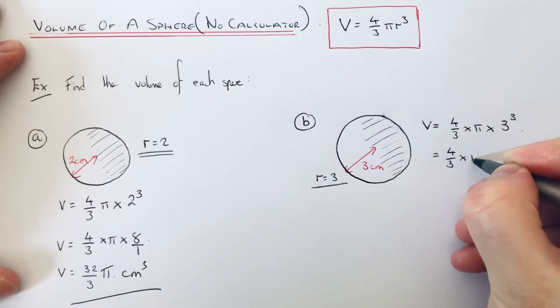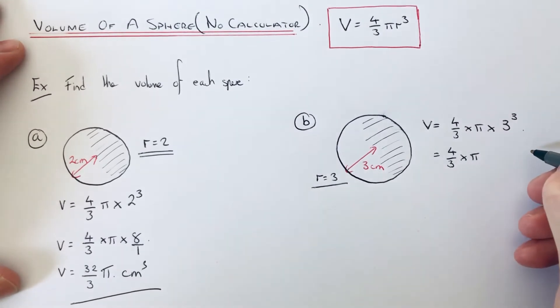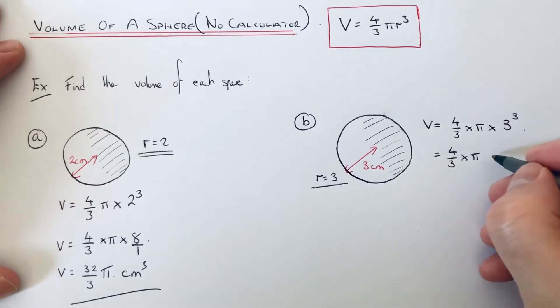Again, if you work out 3³, which is 3 × 3 × 3, 3 × 3 is 9, and 9 × 3 is 27.